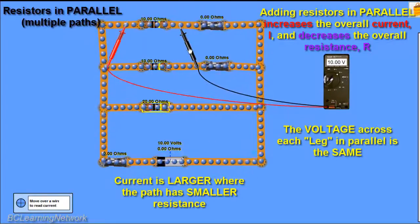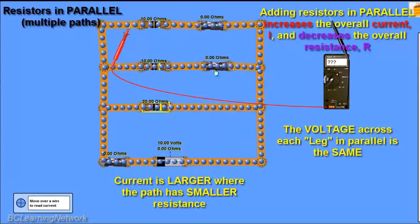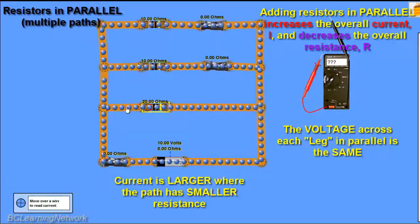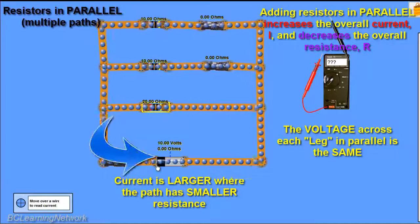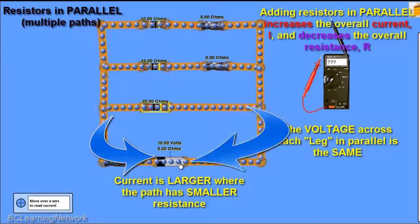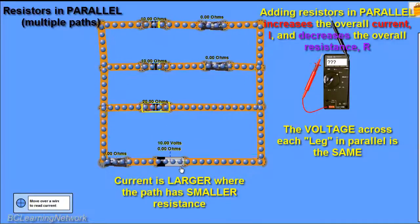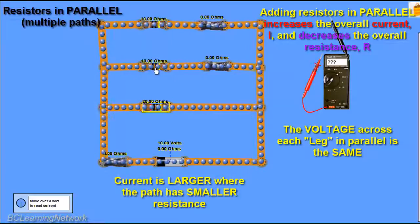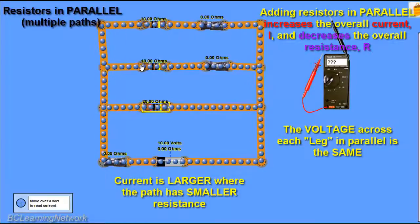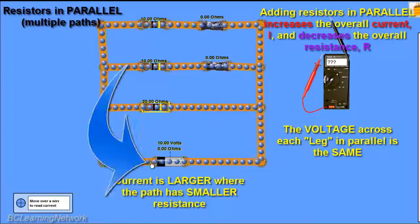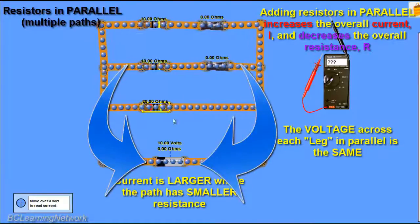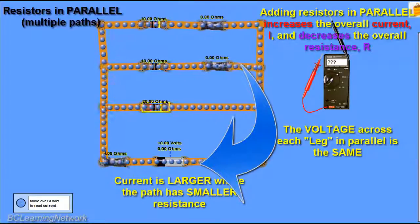You can actually visually see that if you look at the circuit. This resistor has a direct connection to the positive side of the battery and a direct connection to the negative side of the battery, so it's getting the full potential — the full 10 volts. If you look at the next resistor, it's the same: a direct connection to the positive and a direct connection to the negative. It gets the full potential, and so on as we add parallel legs.